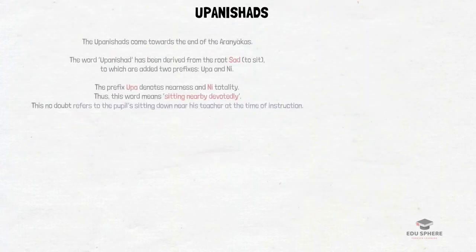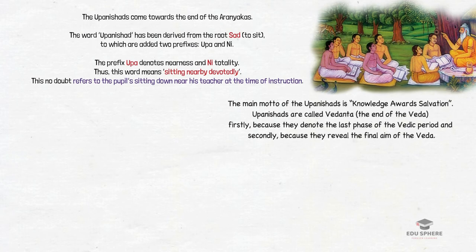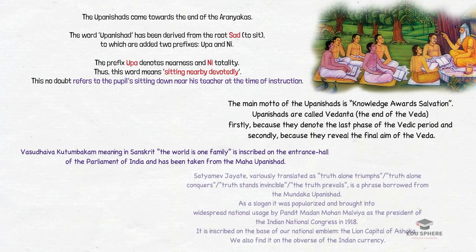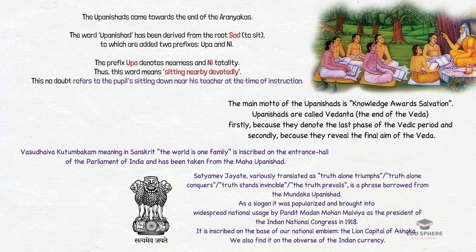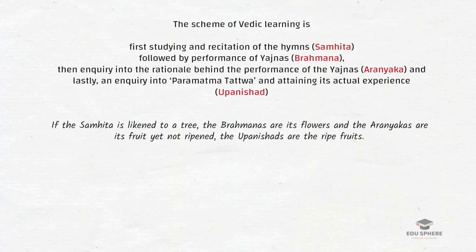Next are the Upanishads — the final parts of the Vedas, which is why they are also referred to as the Vedanta. The nature of the world and God is the essential theme of the Upanishads. To simplify: the scheme of Vedic learning begins with studying and recitation of hymns (Samhitha), followed by performance of Yajnas (Brahmana), then an enquiry into the rationale behind those Yajnas (Aranyakas), and lastly an enquiry into the Paramatma Tattwa (Vedanta/Upanishad). If the Samhitha is likened to a tree, the Brahmanas are its flowers, Aranyakas are the unripe fruit, and Upanishads are the ripe fruits.